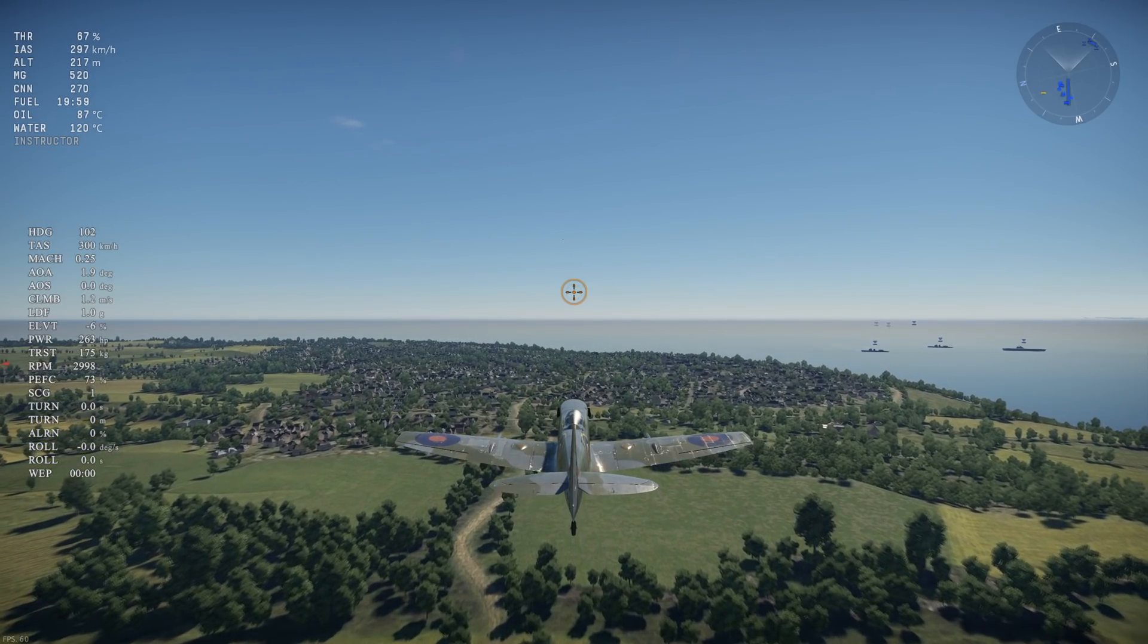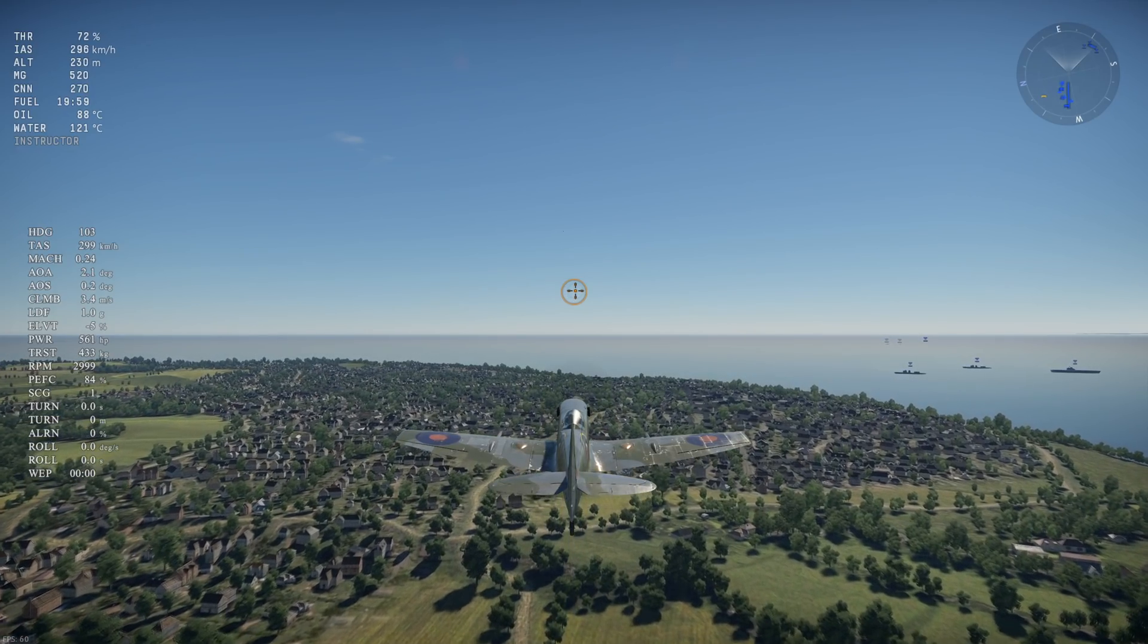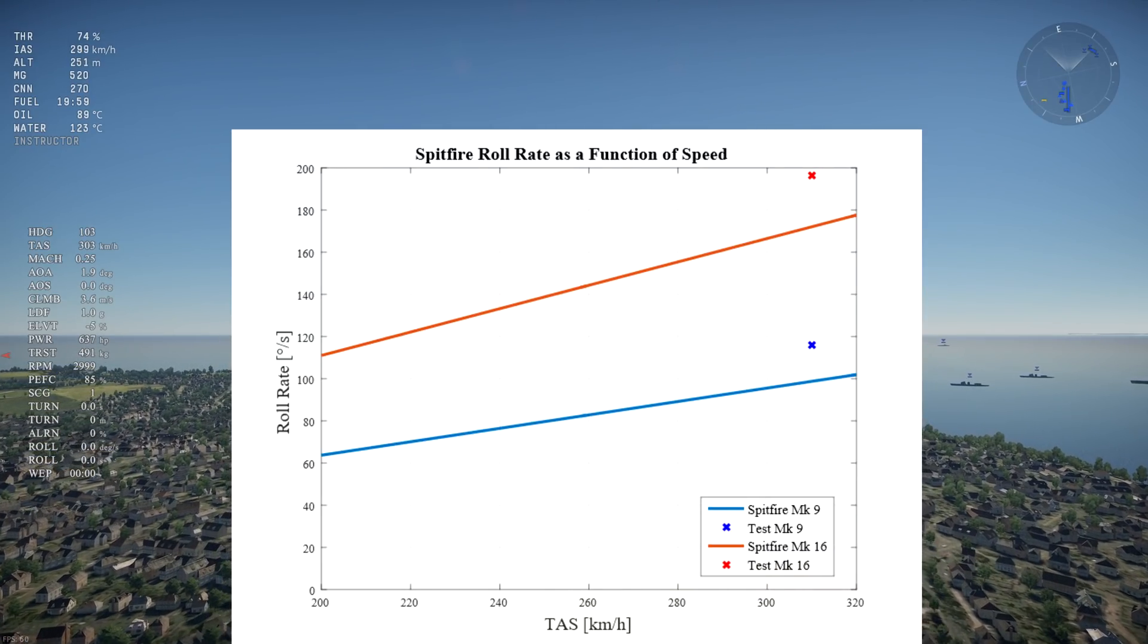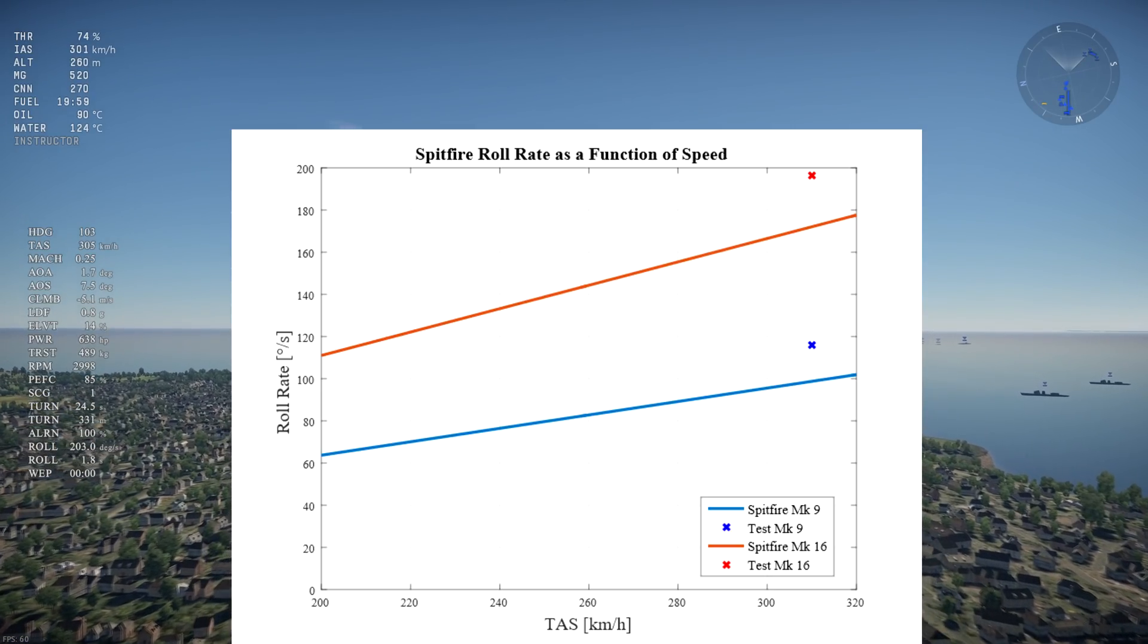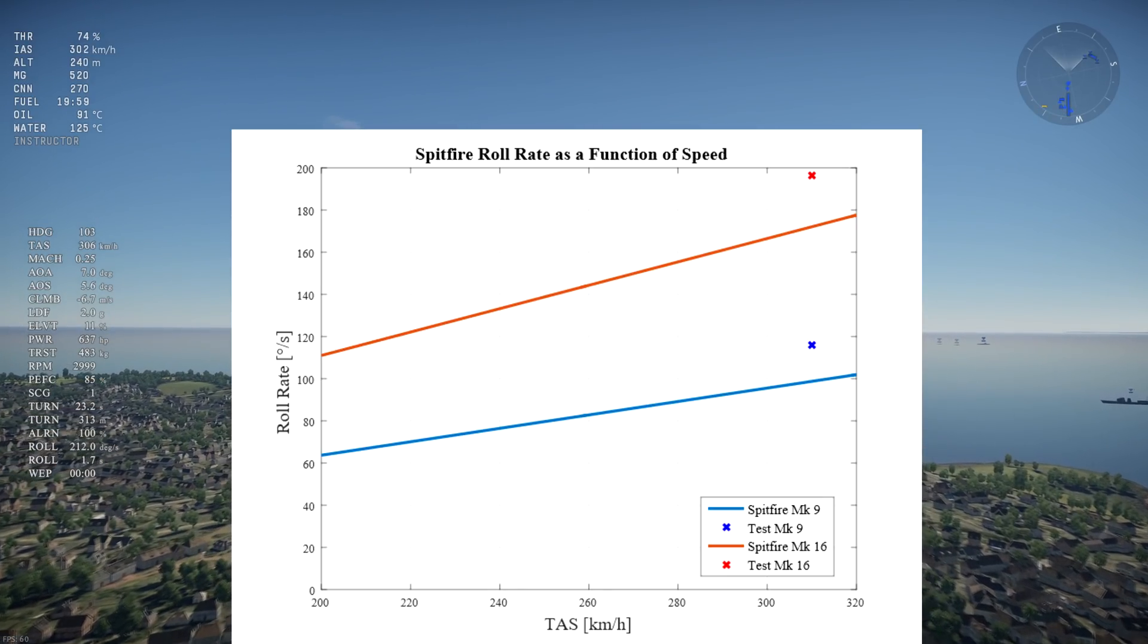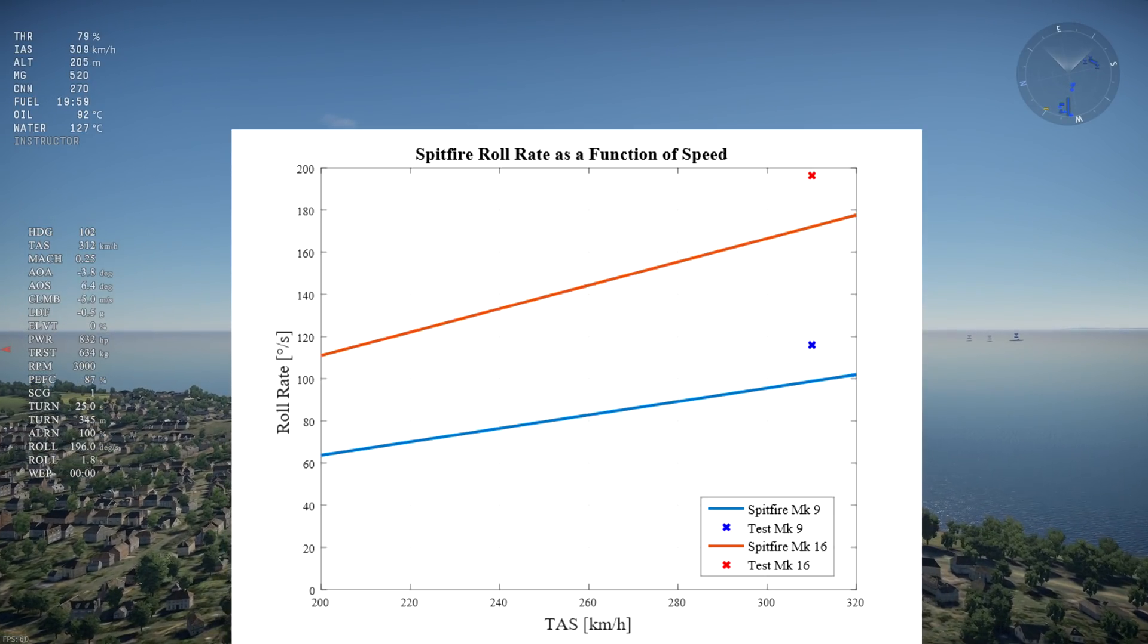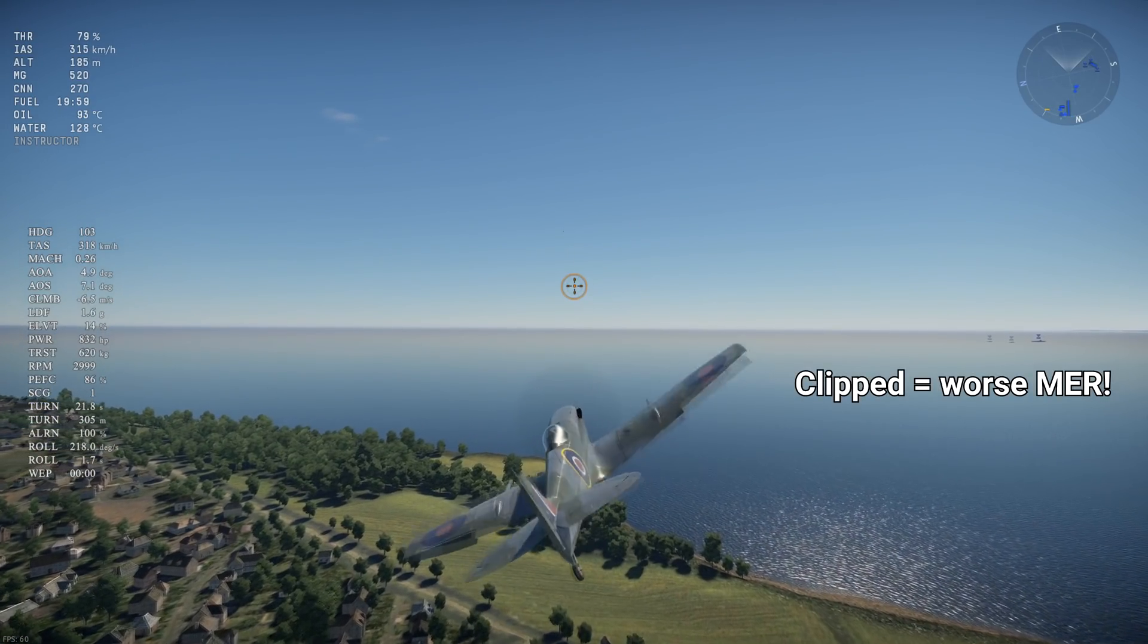The MK9 and the MK16 have essentially identical flight models, so let's compare the two in the rolling department. On this roll rate graph, we have the Spitfire MK9 in blue and the clipped MK16 in red. By reducing the wingspan of the MK16 by 1.3 meters or 12%, the MK16 enjoys a big increase in roll rate over the MK9. The test flight points confirm this advantage. However, the consequence of cutting the wingtips is a big reduction in maneuvering energy retention.